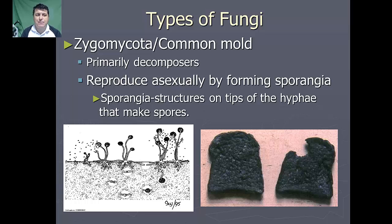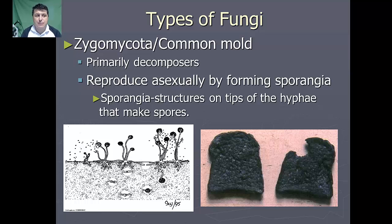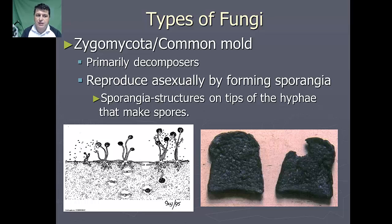Another type of fungi is going to be our zygomycota, or common mold. These are going to be primarily decomposers. They can reproduce asexually by forming specialized structures called sporangia. The sporangia are the structures on the tips of the hyphae that are going to be able to make the spores.